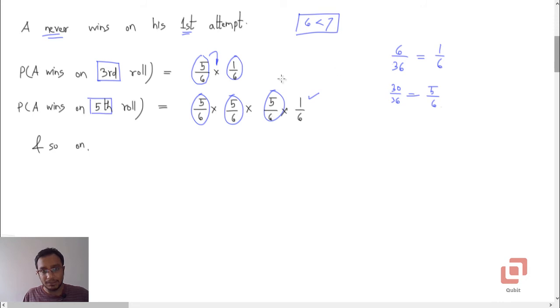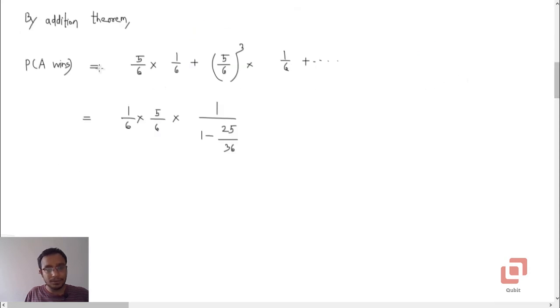So, by the addition theorem, if you just add these probabilities, now clearly this is going to lead us to an infinite series. Because we can never tell on which roll is A going to win or B going to win. So, the probability that A wins is the probability that he wins on the third, he wins on the fifth, he wins on the seventh and so on. And every time you will find that the common ratio is 5 by 6 raised to 2.